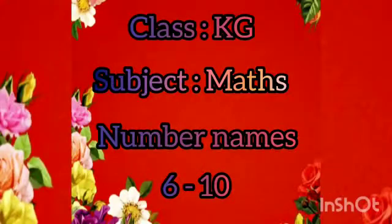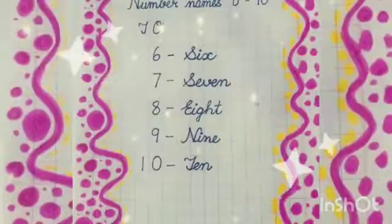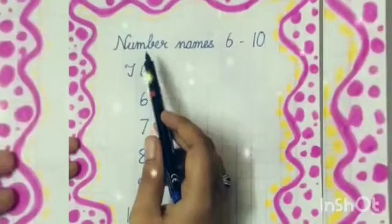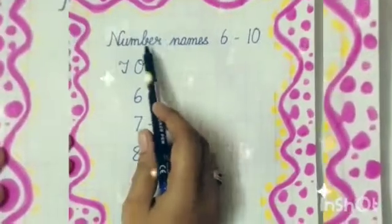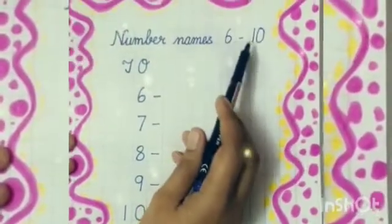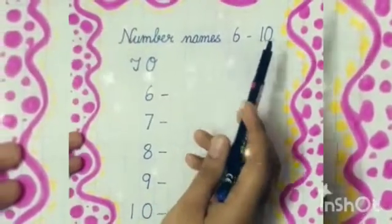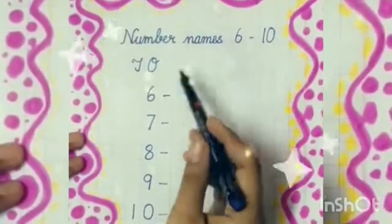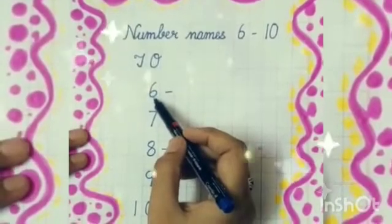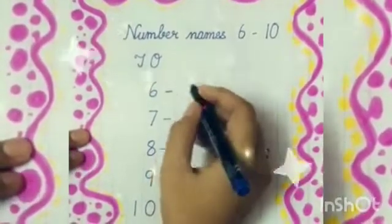Good morning, my dear lovely kids. Today, I am going to teach you how to write number names from 6 to 10. My first number is 6.